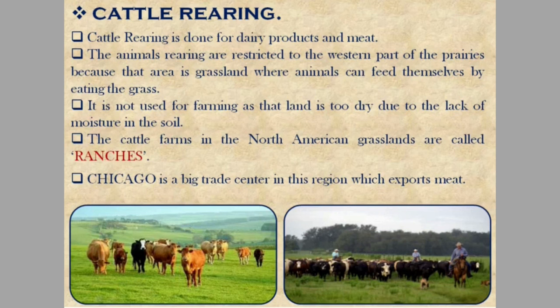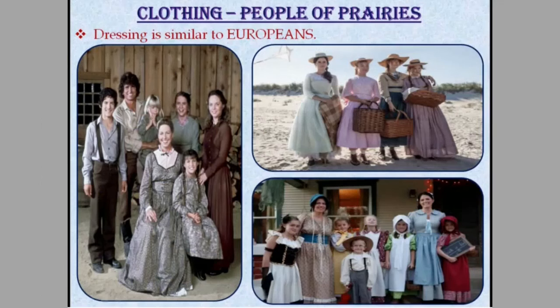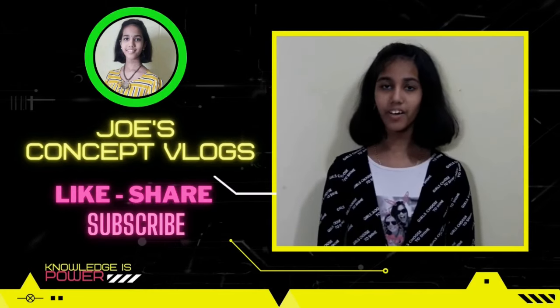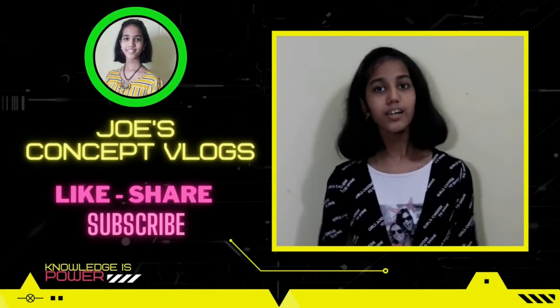Chicago is a big trade center in this region which exports meat. The farmers of prairies are very rich and their standard of living is high. They live in homesteads along with their families and have all the latest comforts and amenities in their home. From these pictures, we can understand the clothing of people of prairies. Their dressing is similar to Europeans. So that was all about prairies. If you liked my video, please like, share, and don't forget to subscribe to my channel, Joe's Concept Vlogs!